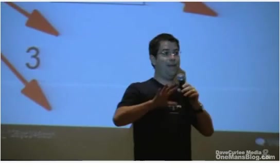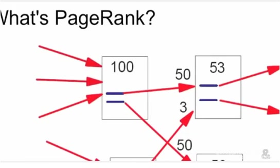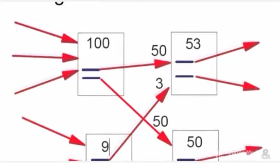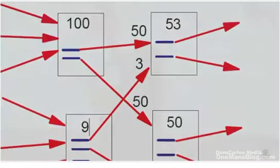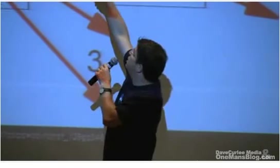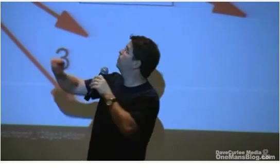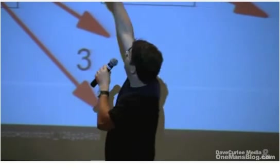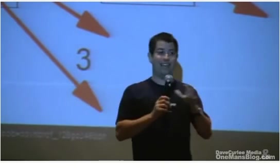If you look at the top one, this guy's got a PageRank of 100. He's got a lot of PageRank, and he's got two outlinks. So each of those two outlinks — you take 100, divide by two because you've got two outlinks, and 50 goes to each one of those. That's literally the idea behind PageRank. It's that simple.